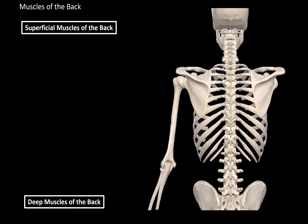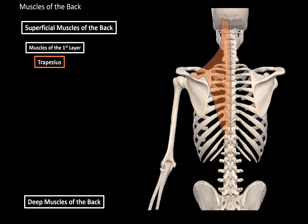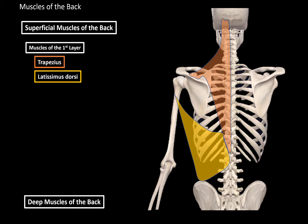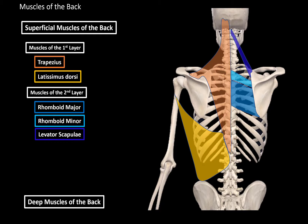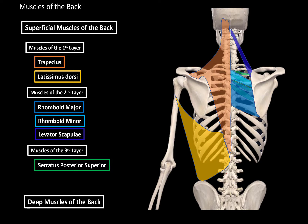These muscles are divided into layers. The first layer is the most superficial one, and it consists of the trapezius and the latissimus dorsi. The second layer consists of the rhomboid major, rhomboid minor, and levator scapula. The third layer consists of the serratus posterior superior and the serratus posterior inferior. These are the muscles we're going to go through throughout this video.